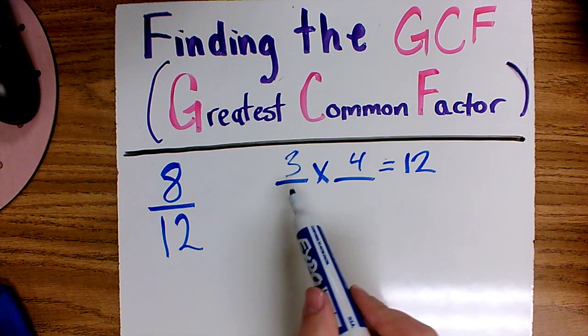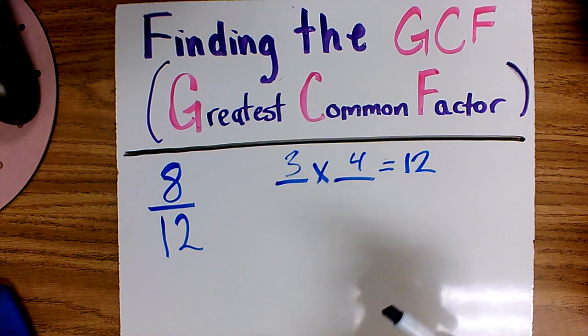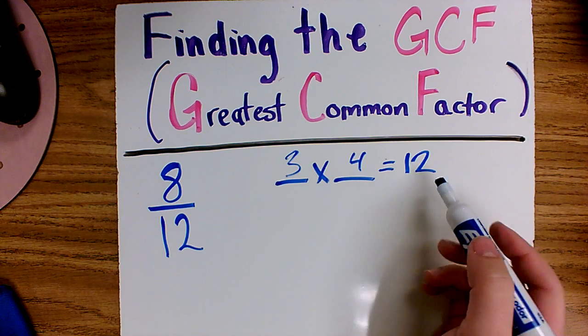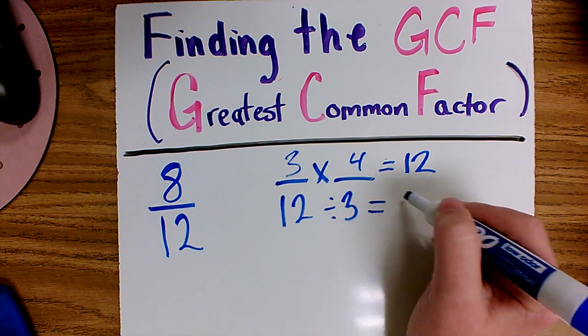We know that a multiplication sentence is just division backwards, so if 3 times 4 equals 12, I know that 12 divided by 3 equals 4.